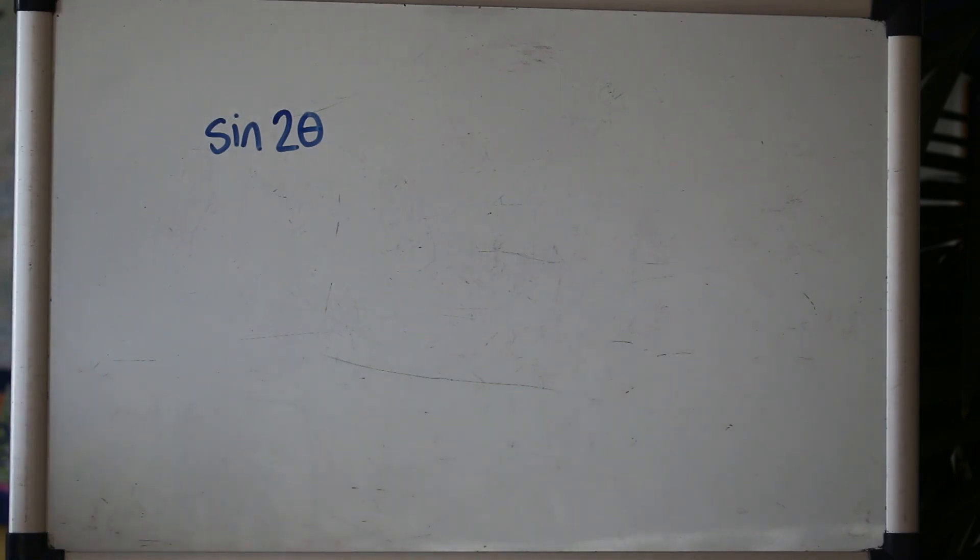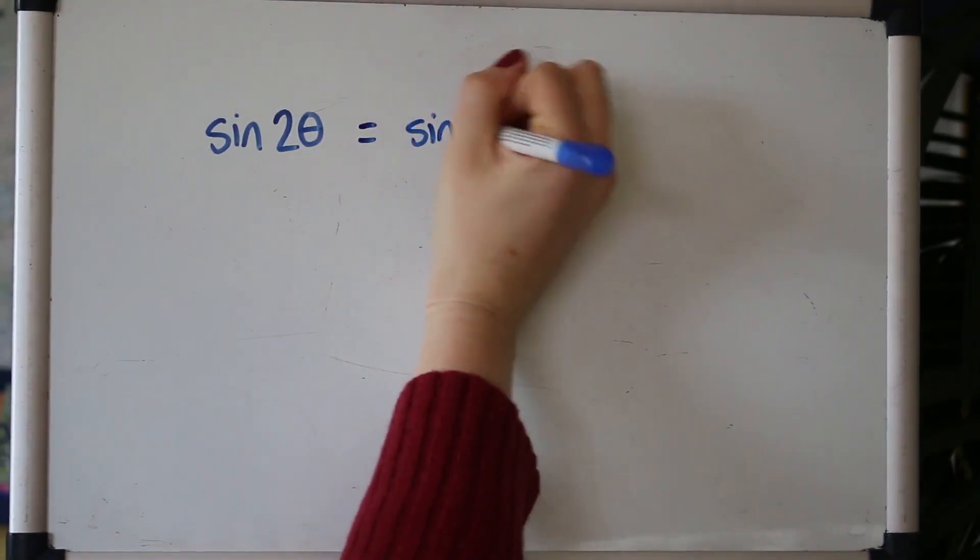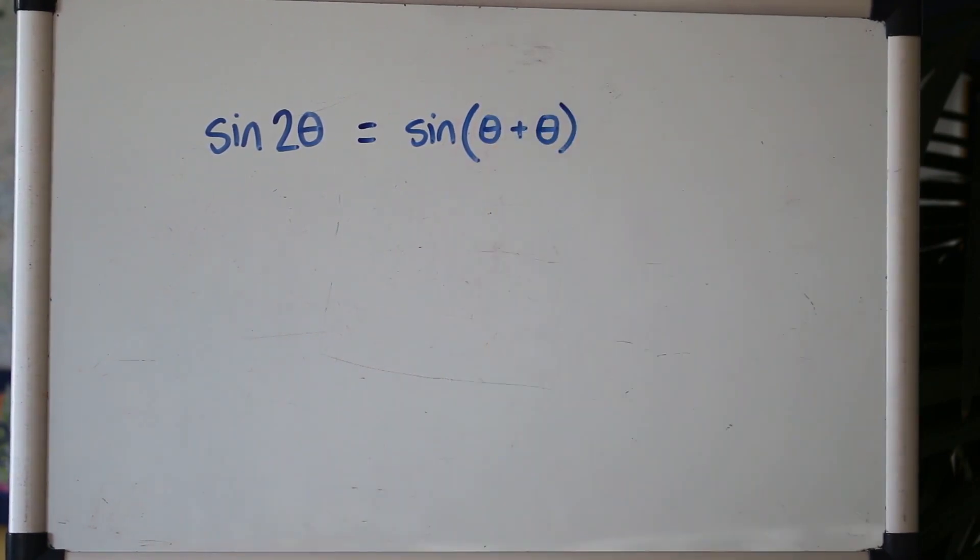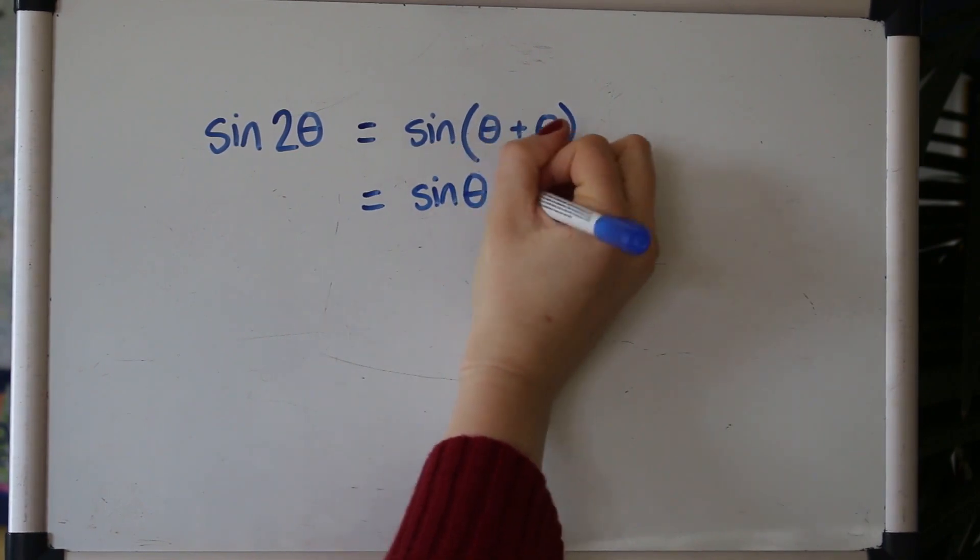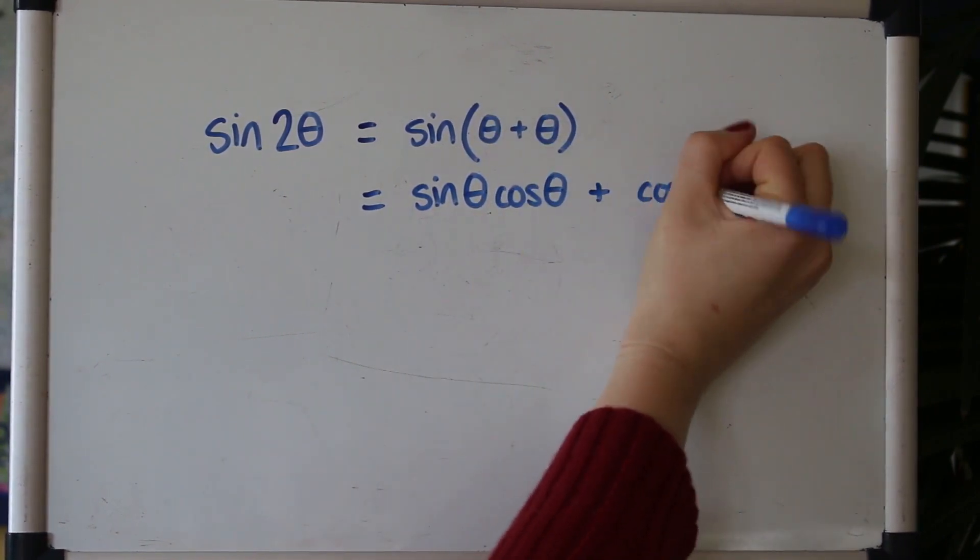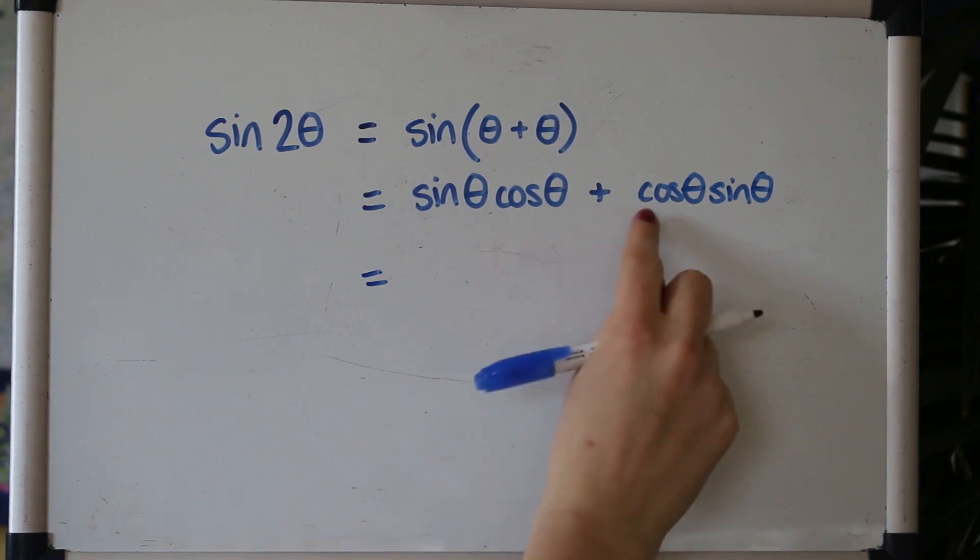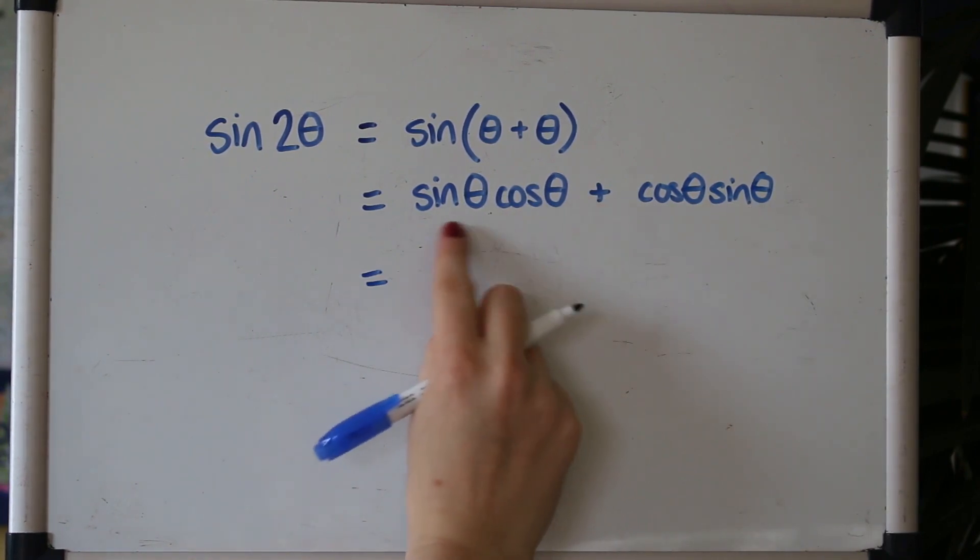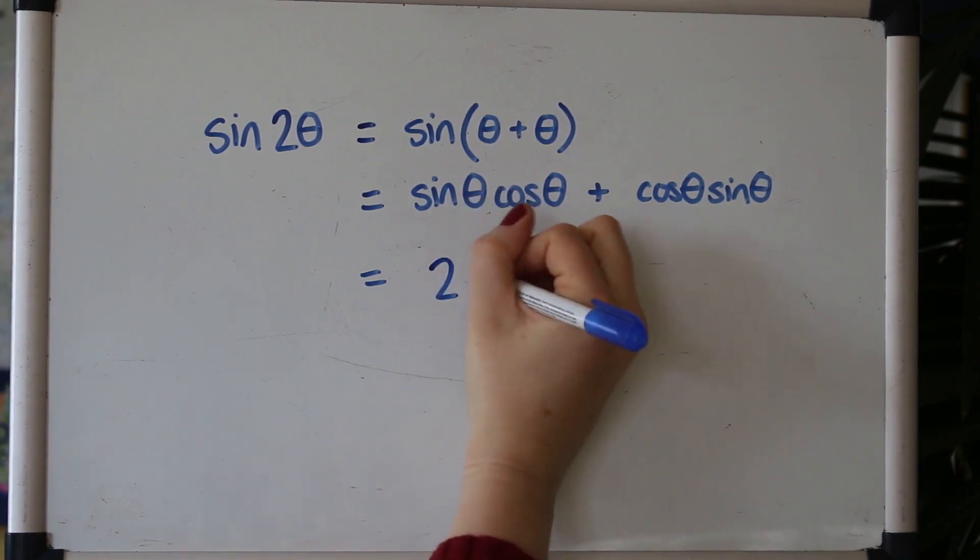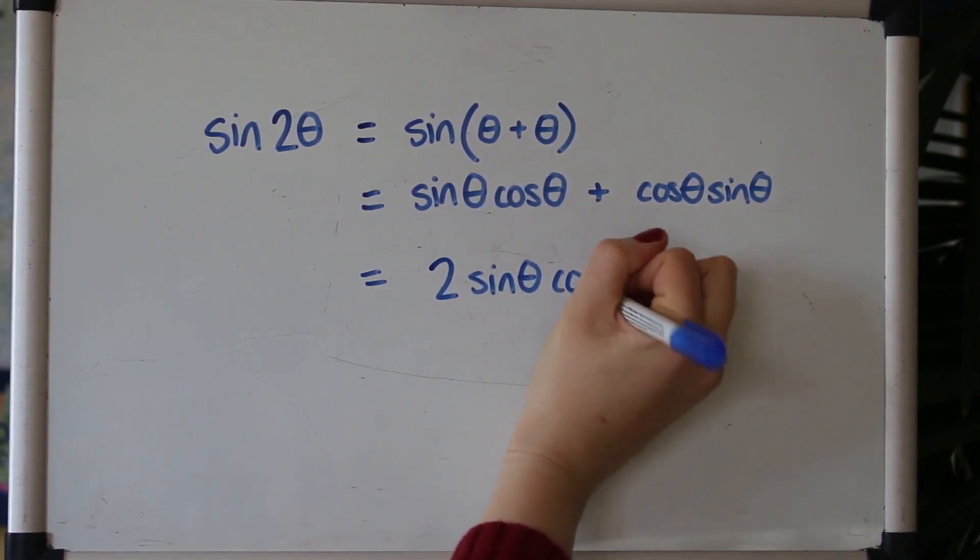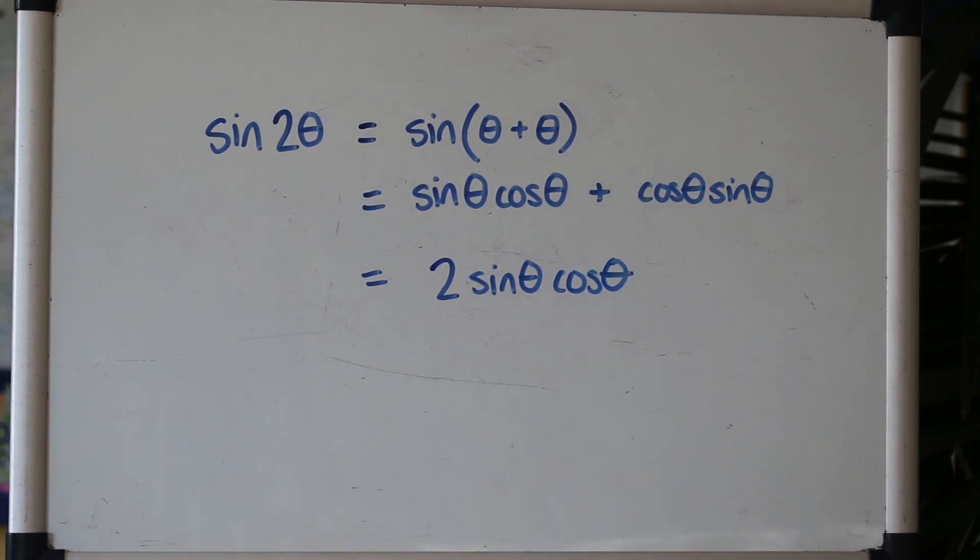Let's look at how to derive these now using the addition formulae. We'll start with sine. Now the way to use the addition formulae on these is to write 2θ as θ plus θ. Then you can use the addition formula. These are the same term with sin and cos the other way around. That's the same thing so we can combine those and then that is your double angle formulae. Very straightforward.